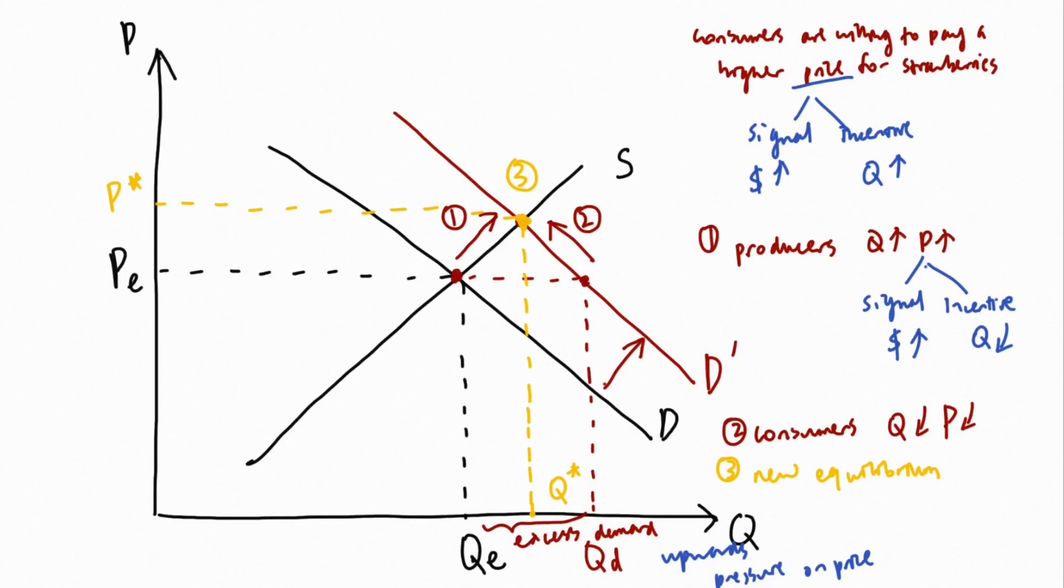And now we have a new equilibrium in which the excess demand has been eliminated and quantity supplied is once again equal to quantity demanded.